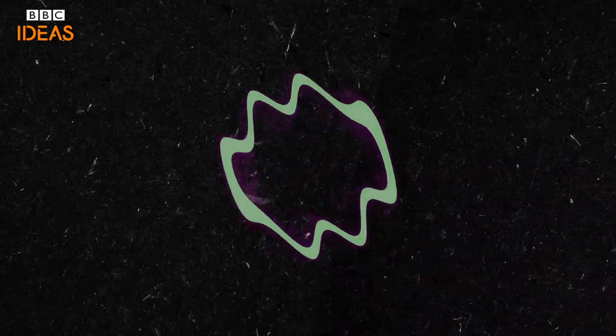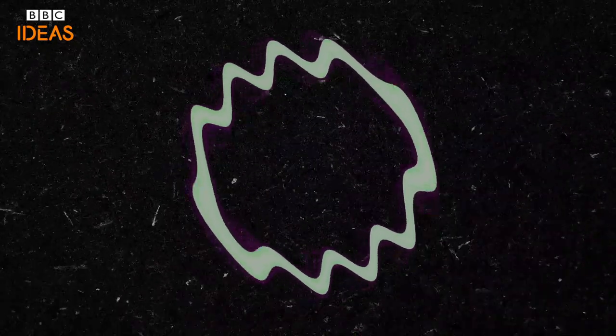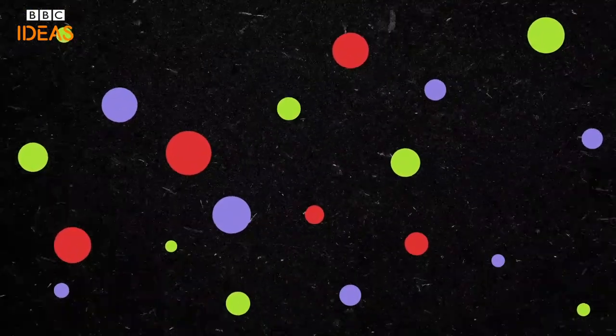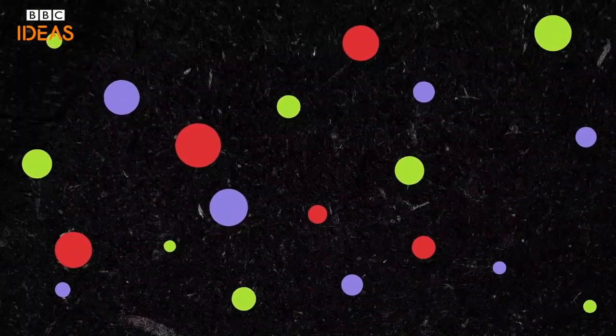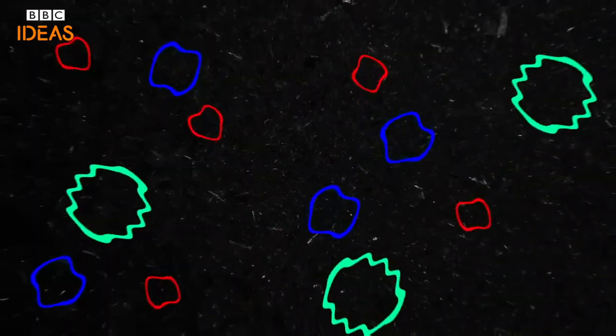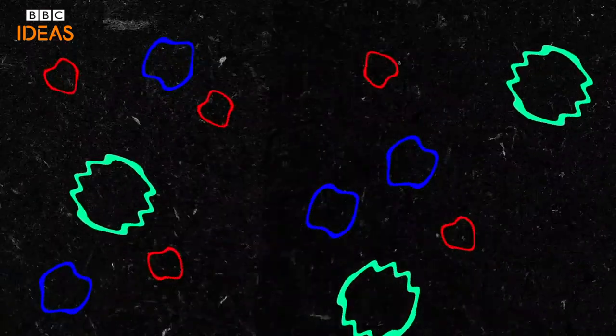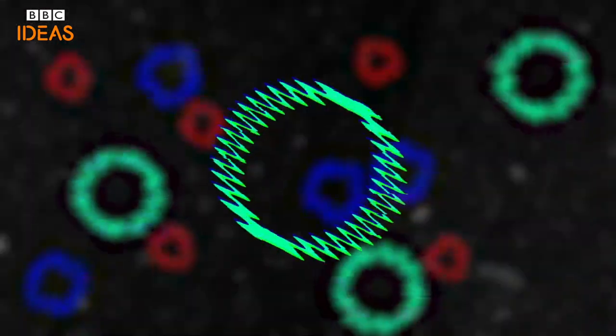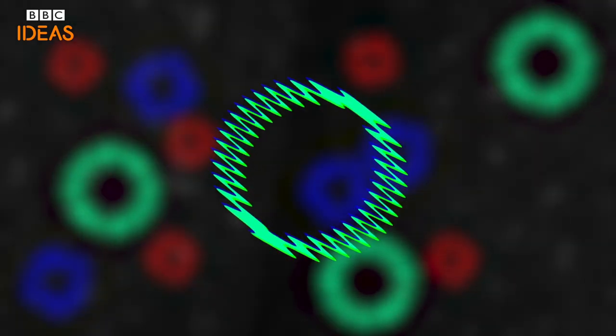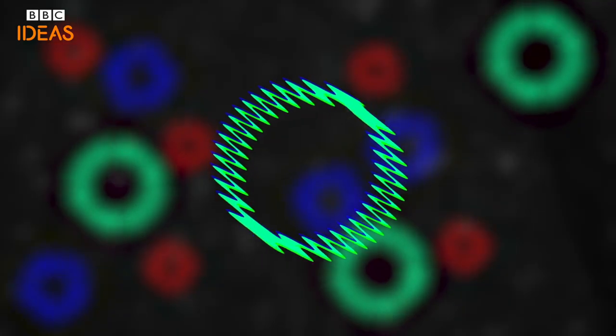We think that dark matter could be the next octave of the string. If you could magnify all the particles you see around us, we would see a lot of rubber bands vibrating at different frequencies. But the rubber band has higher octaves. That we think is dark matter.